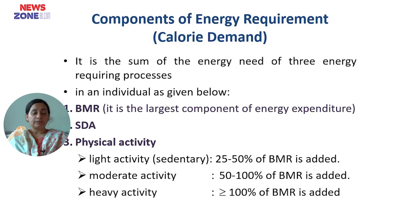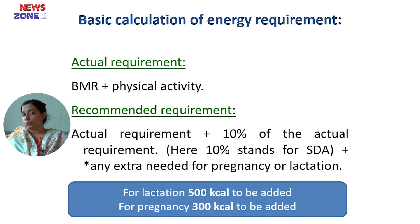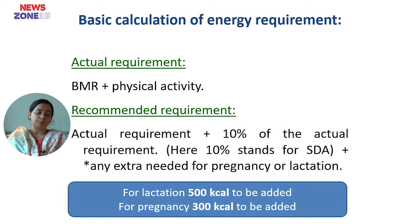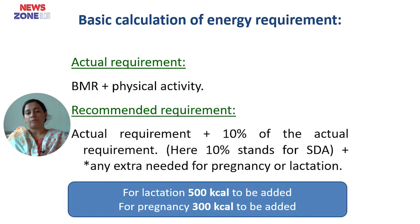So the actual energy requirement equals BMR plus physical activity. The body's internal functions — cardiac, respiratory, ion transport — account for BMR. On top of that, physical activity calories are added. Additionally, 10% of the actual requirement is added for the thermogenic effect of food. For pregnancy, an extra 300 kcal is added, and for lactation, an extra 500 kcal is added.